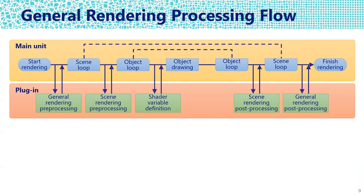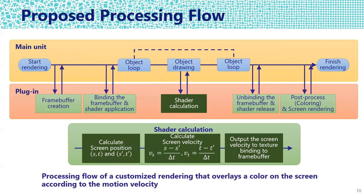This figure shows the general rendering processing flow. The VR development platform is able to implement pre-processing and post-processing rendering for a particular scene. It can also define variable values to be delivered to the shader when rendering objects, which can be used on the shader processing side. This shows the proposed processing flow of a customized rendering that overlays a color on the screen according to motion vector values. The developed shader calculation process is processed in the plugin when processing object drawing in the main unit. In the detailed shader calculation process, the position on the screen is calculated along with the relative velocity on the screen, and then output to the frame buffer as a texture based on the calculated relative velocity.